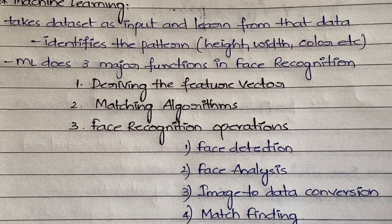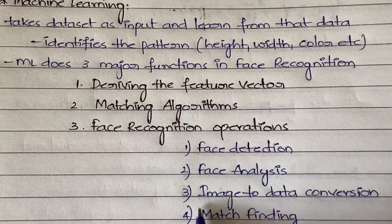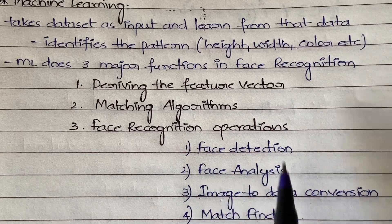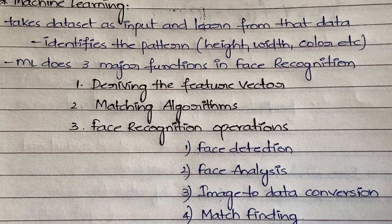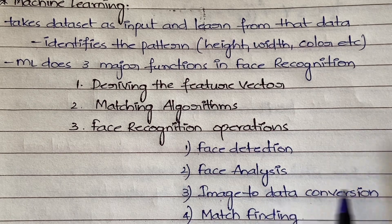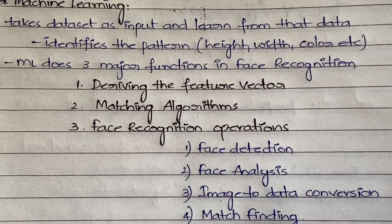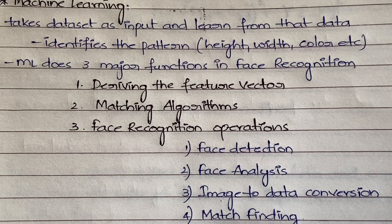The third operation is image to data conversion — since the machine can only understand binary language, the image is converted into a format the machine can understand. The fourth operation is match finding — based on the converted data it finds the correct matching face. So the four operations are: face detection, face analysis, image to data conversion, and match finding.